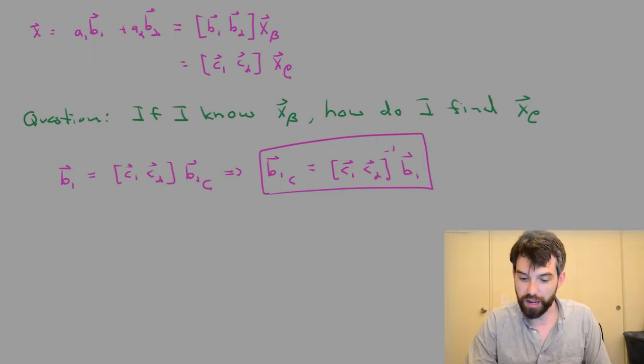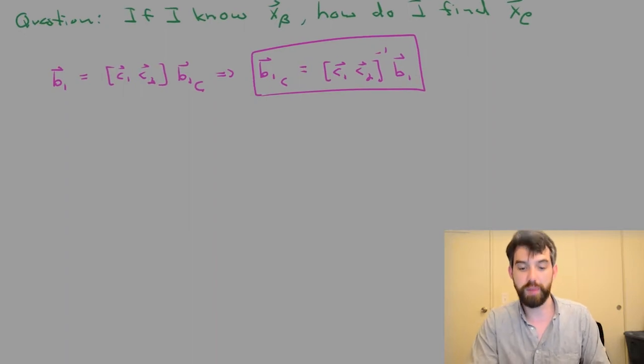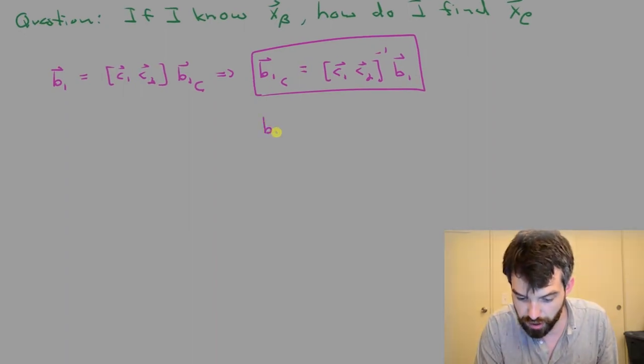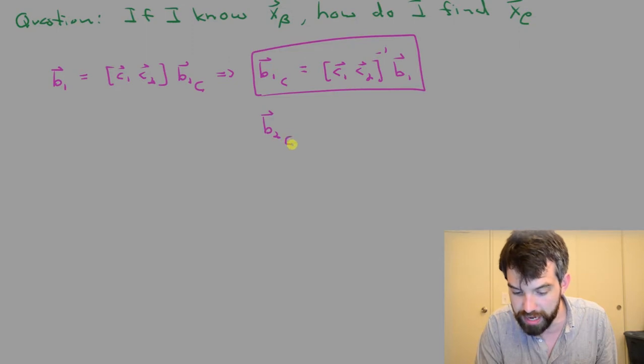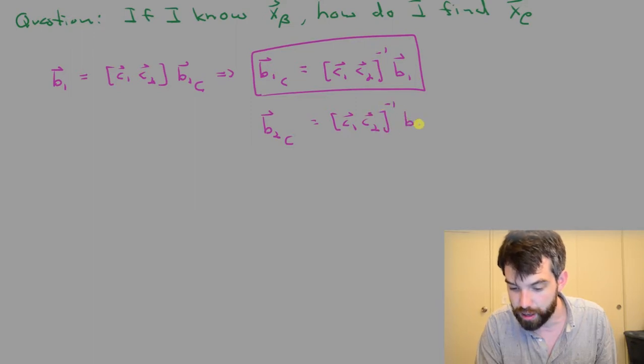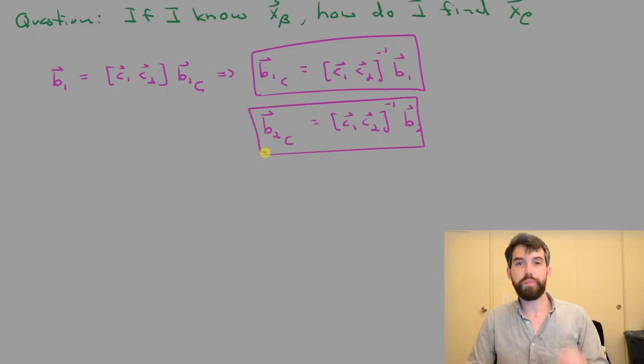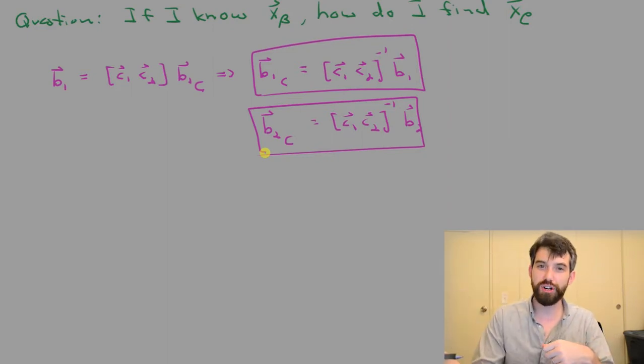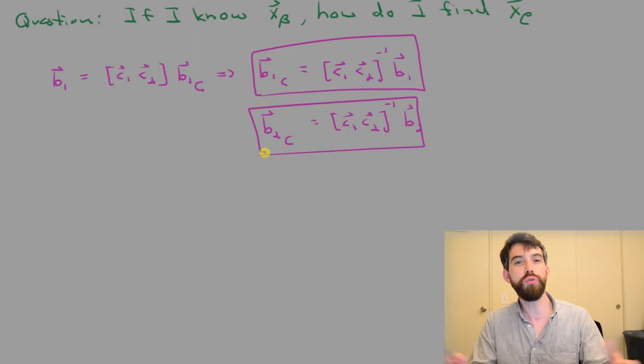However, I can also say exactly the same thing for B2. So I can come here and I'm not going to do the computation out. I'm just going to note that B2 in that C basis is also going to be C1, C2, the inverse of that, B2. So, these particular equations aren't really doing anything new. I already knew how I could take a vector and write it in the C basis. I've just chosen to do that process for the specific vectors, the basis of B.